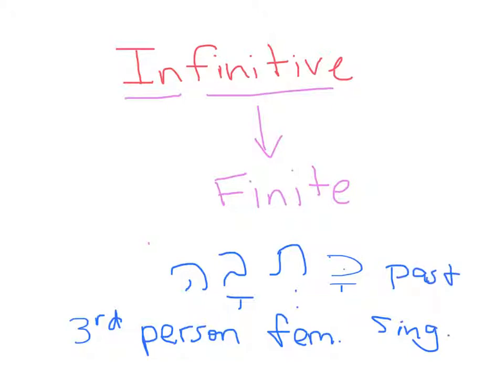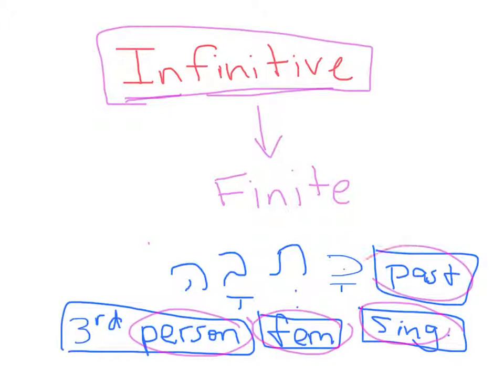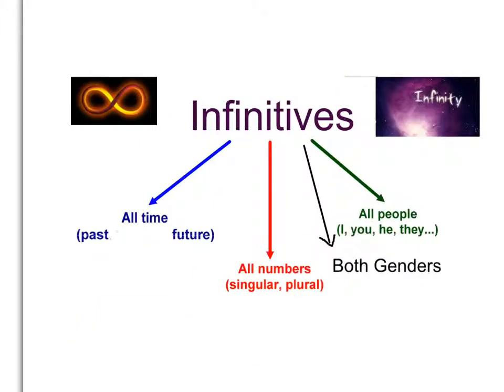So we're dealing with, already right off the bat, three ways that it's finite. Now when I'm dealing with the infinitive, it's going to be the opposite. It's not going to be limited by person, by gender, by number, or by time. Here we see a visual about how the infinitive is infinite.